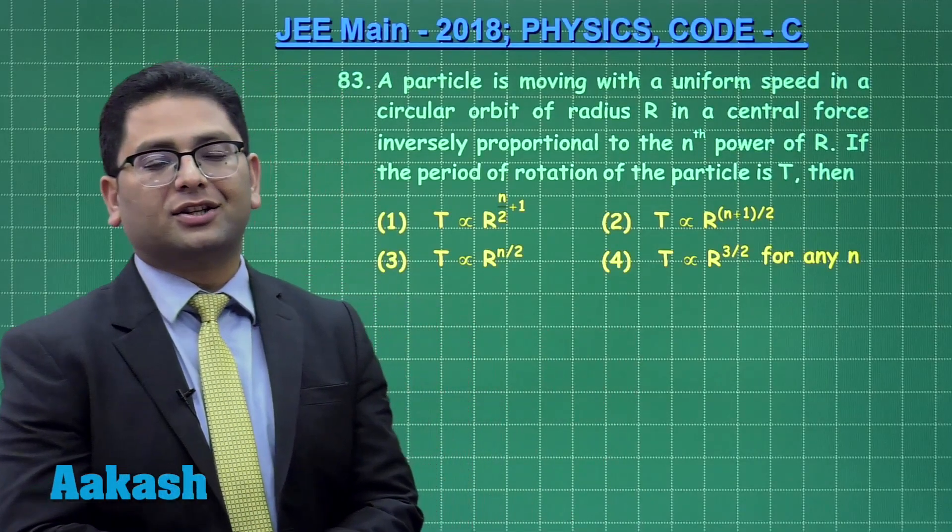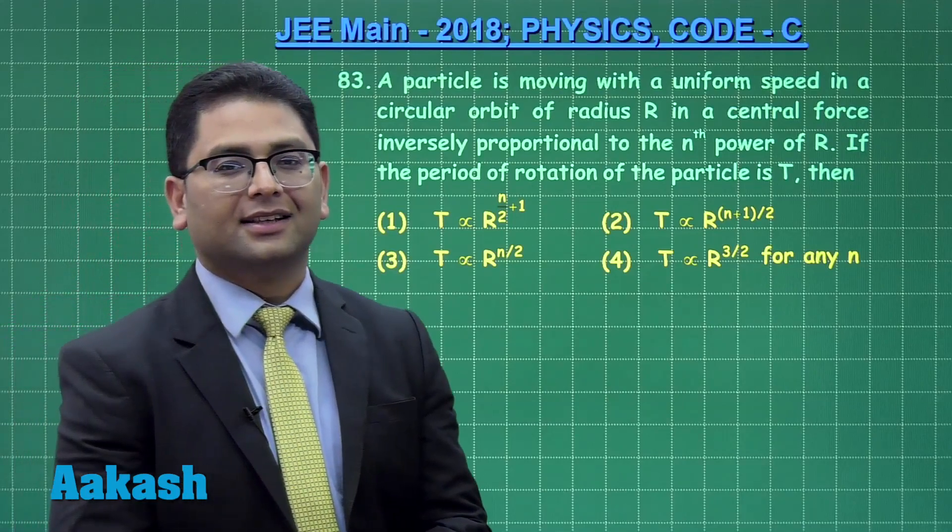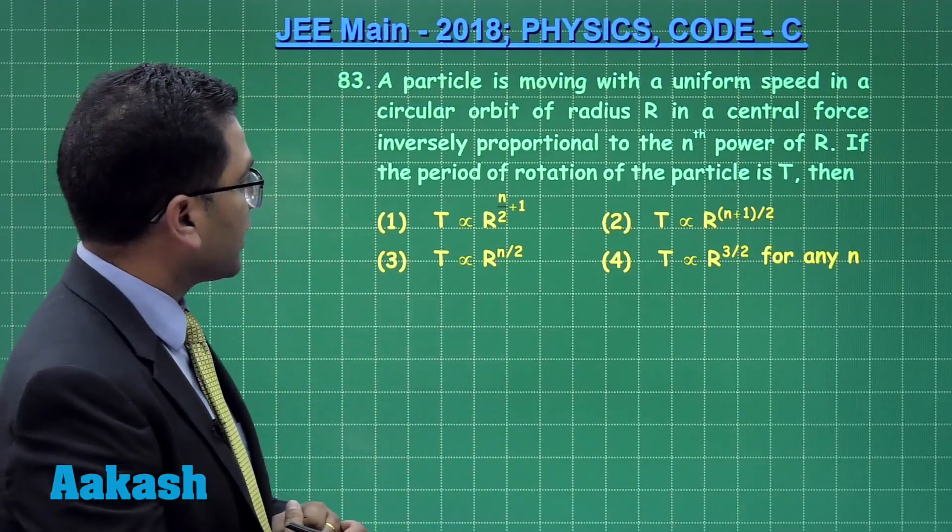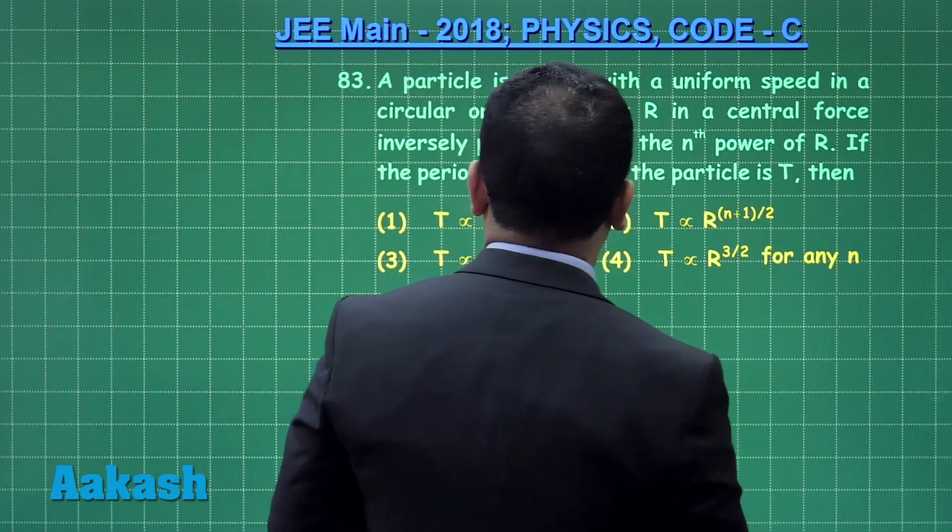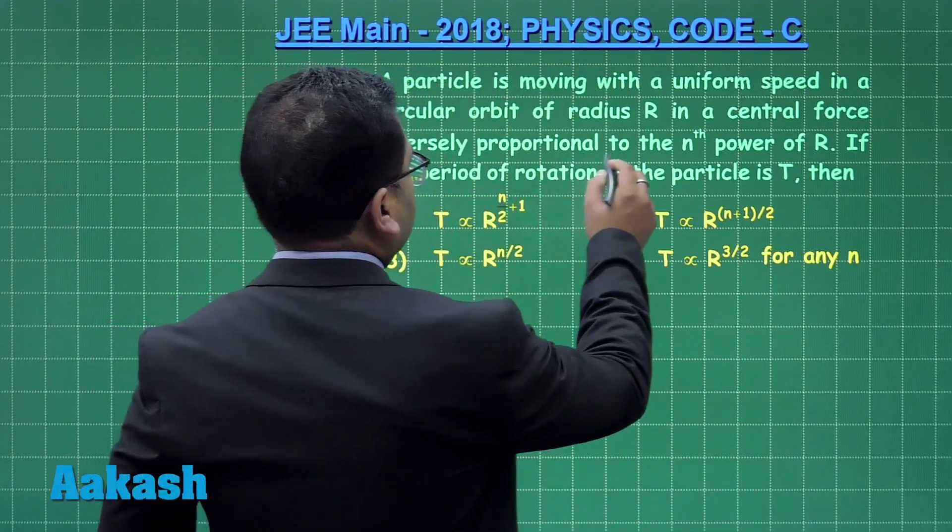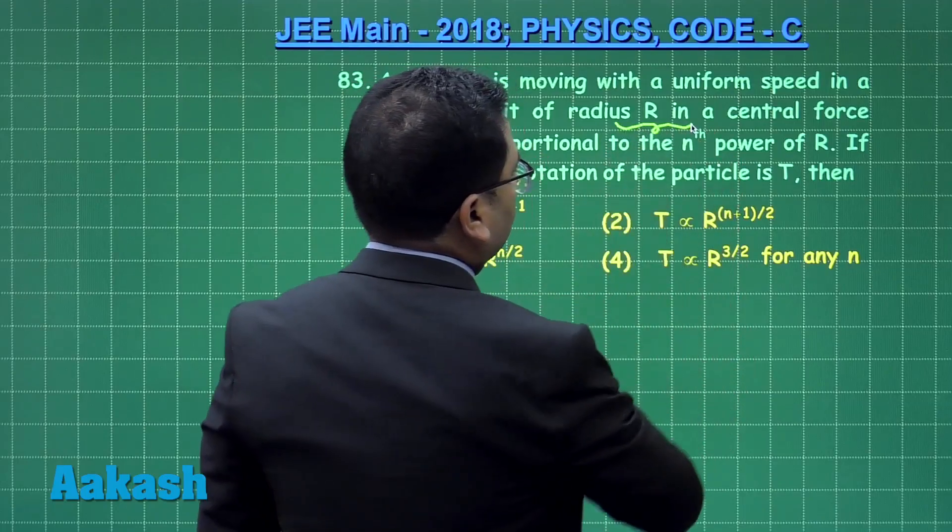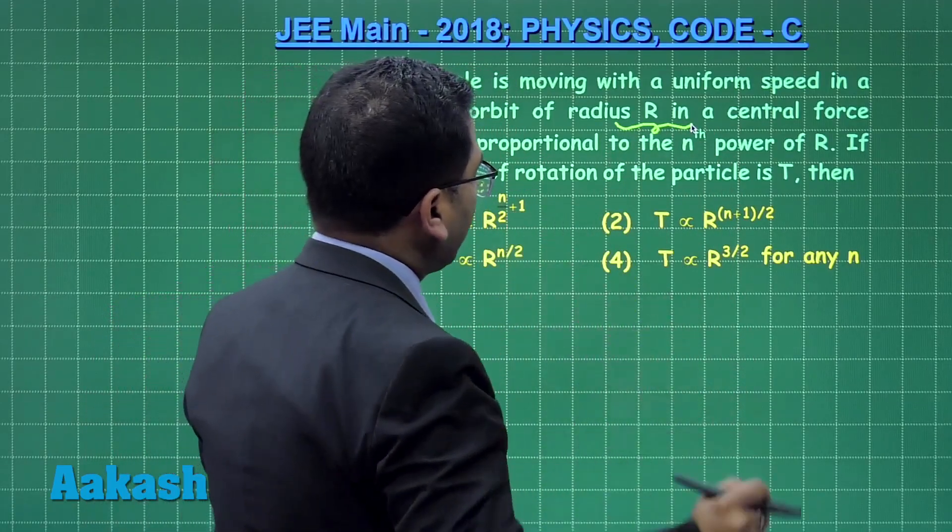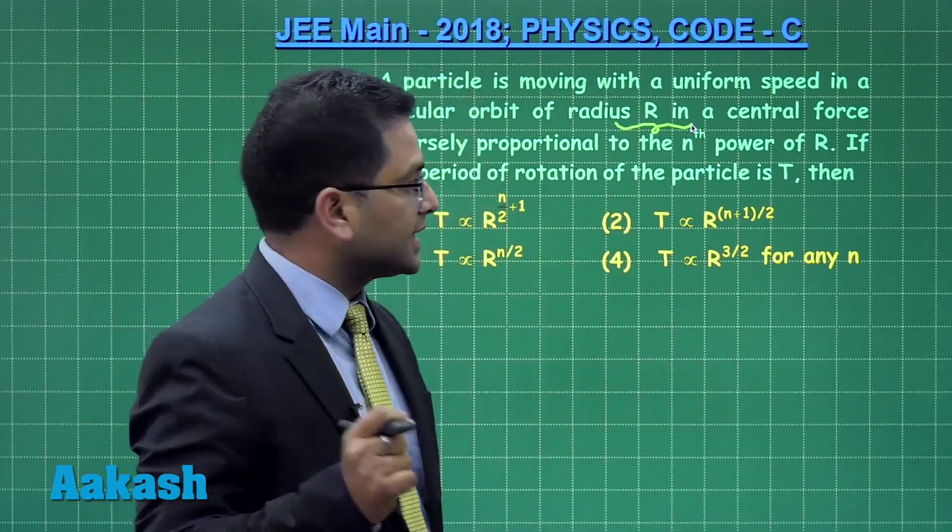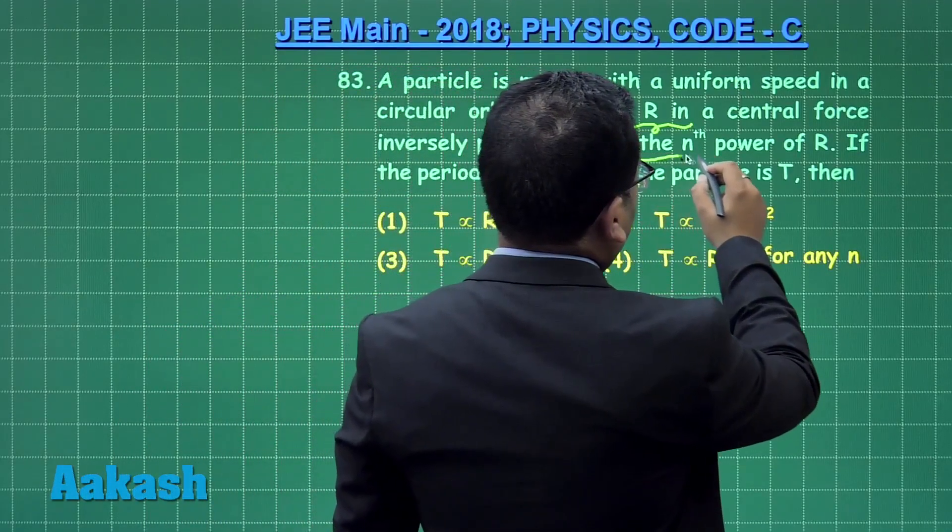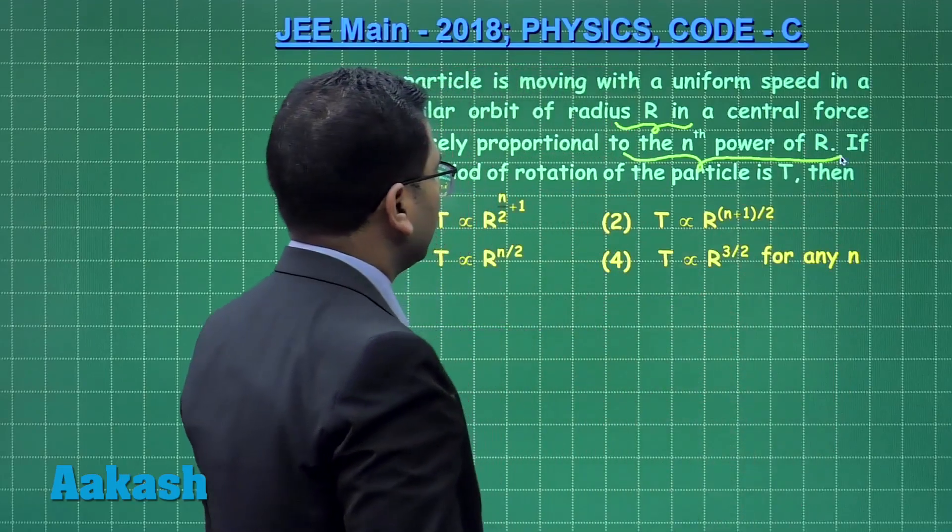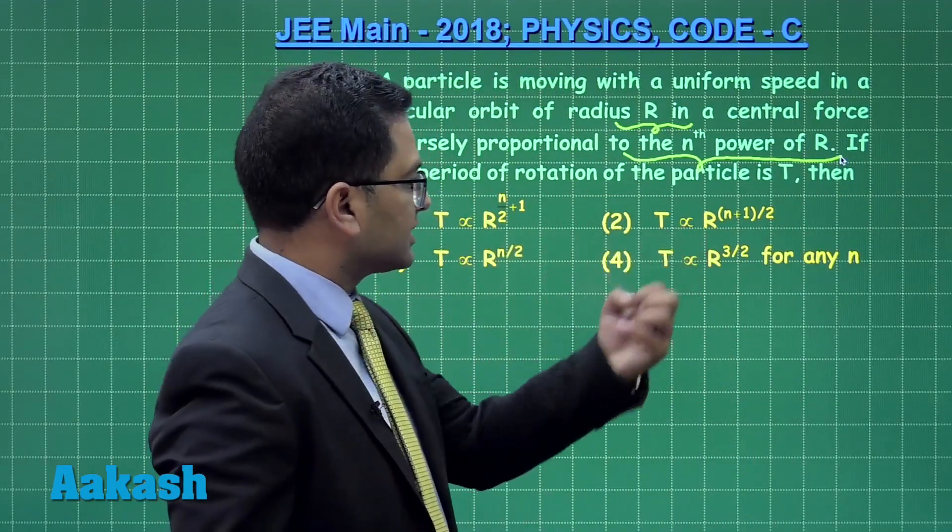All right, question number 83, a direct one from mechanics doesn't require big amount of grey matter. A particle is moving with a uniform speed in a circular orbit of radius r, so the path is circular and maintained by a central force which varies inversely proportional to the nth power of r. And if the period of rotation is this, we need to find the dependence of t.